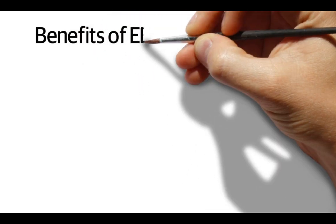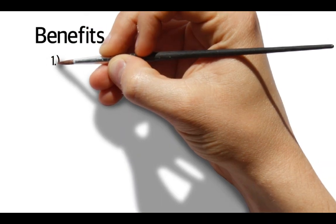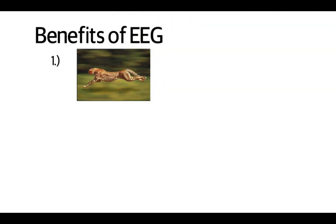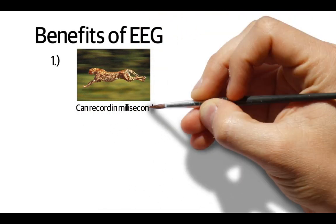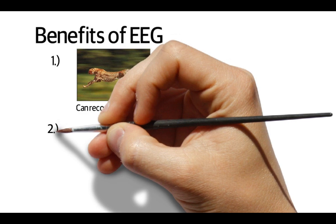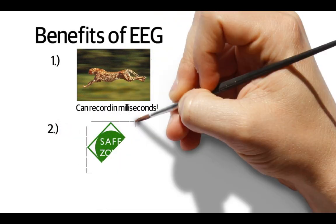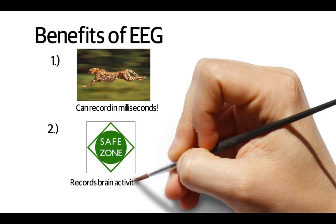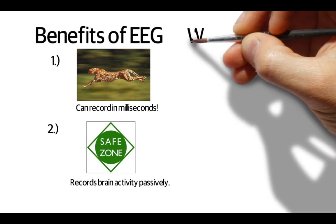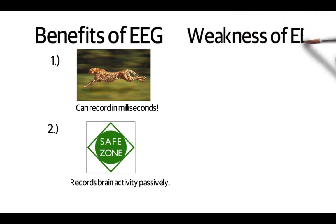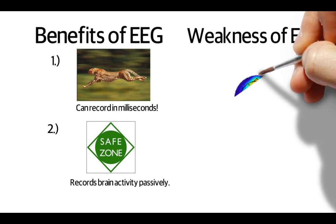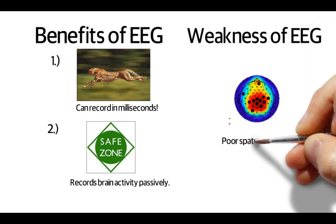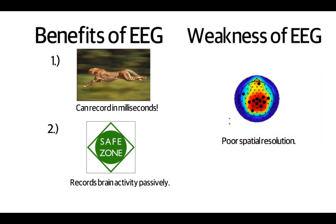EEG is a very effective neuroimaging technique. One of its strengths is that it is fast — EEG can record brain activity on the order of milliseconds. Another strength is that it's very safe; EEG doesn't do anything to the brain, it just passively records the electrical activity the brain is already giving off. One of the main weaknesses of EEG is its poor spatial resolution, meaning it's not very good at telling exactly where things are happening in the brain — at least not as well as other techniques such as fMRI.